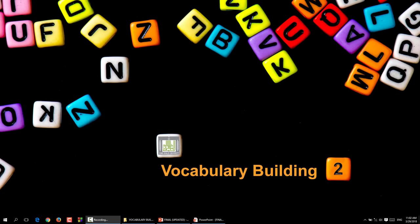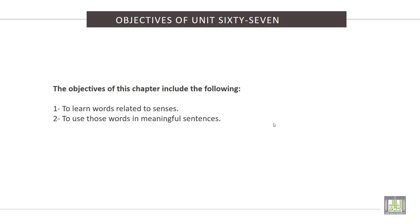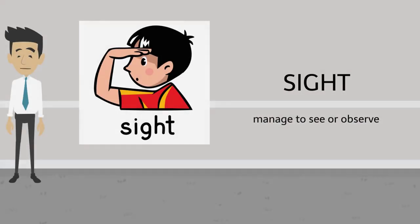Vocabulary Building 2, Unit 67: The Six Senses. The objectives of this chapter include the following: one, to learn words related to senses; two, to use those words in meaningful sentences. Now listen to the video of this unit.